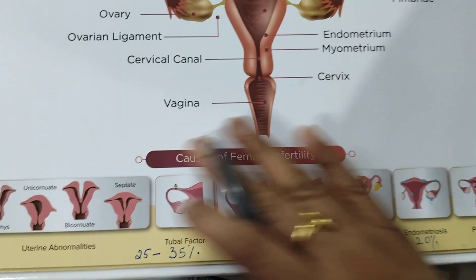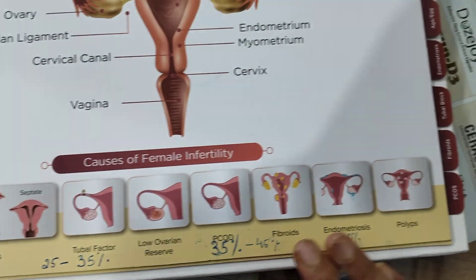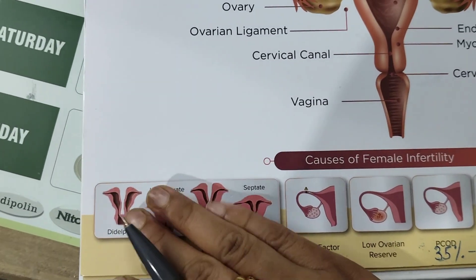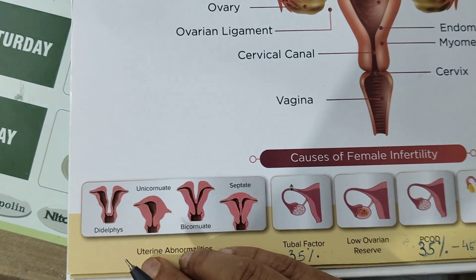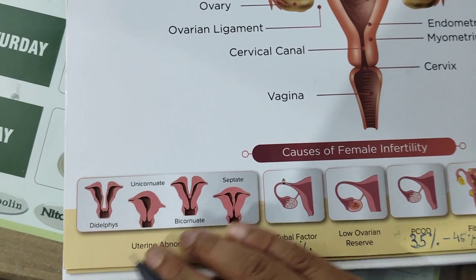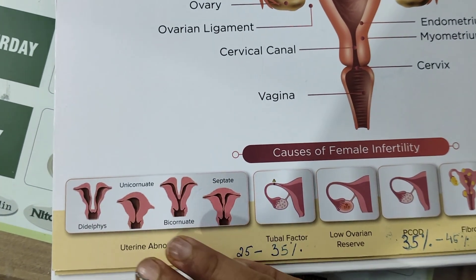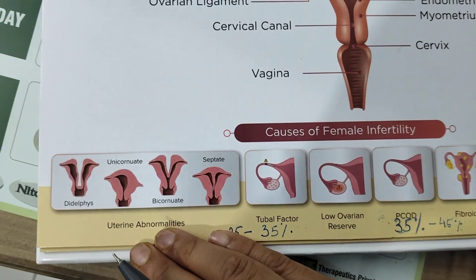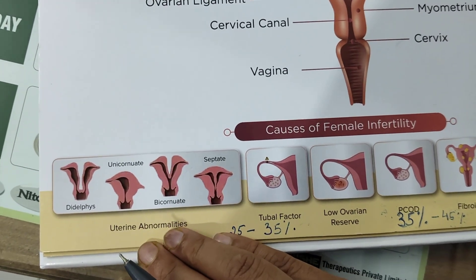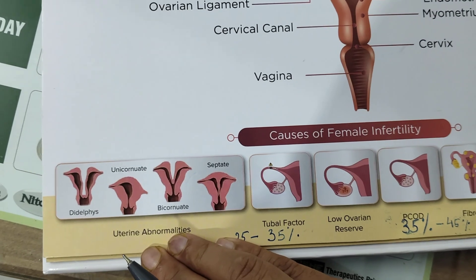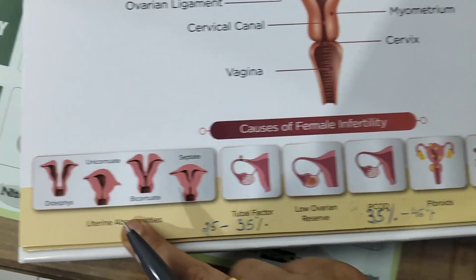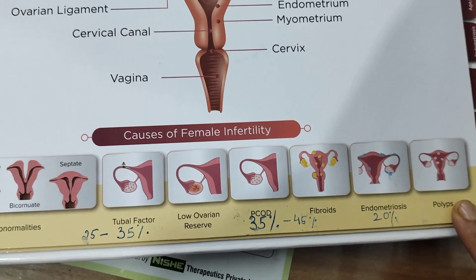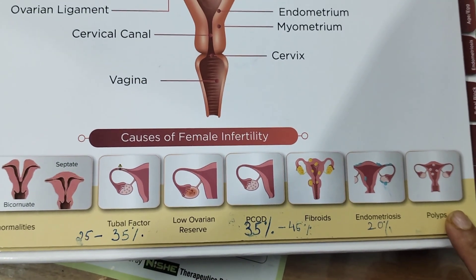The remaining common causes include fibroids, polyps, and uterine anatomical abnormalities — where the uterus formation from birth itself is not proper. The ideal test is hysteroscopy, but 3D ultrasound is also good enough to diagnose the exact uterine abnormality. Uterine abnormalities, fibroids, and polyps always require surgery — a hysteroscopy or laparoscopy for correction.